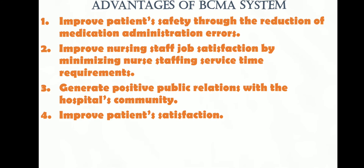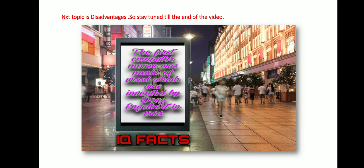Before the disadvantages, here is today's IQ fact: the first computer mouse was made of wood, invented by Doug Engelbart in 1964. Since this is a computer-related topic, it is interesting to know that the very first mouse ever used was a wooden mouse.